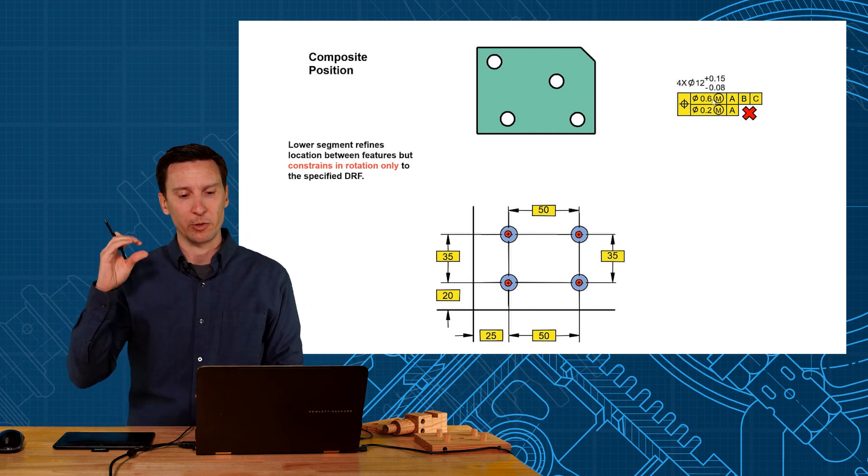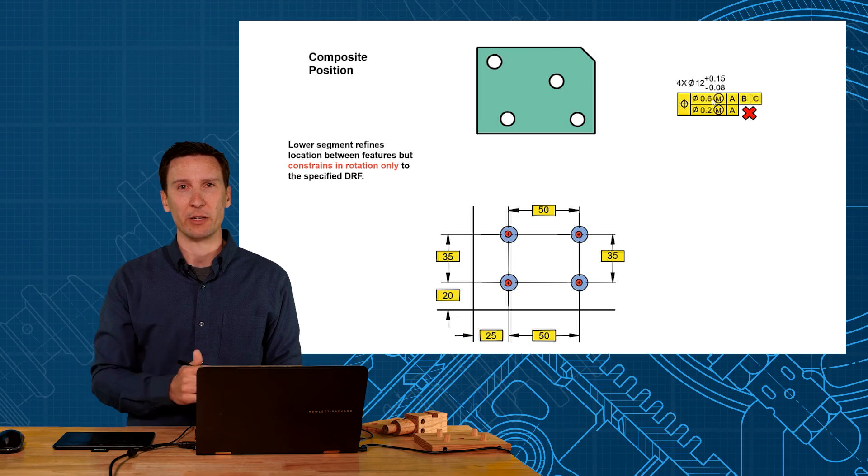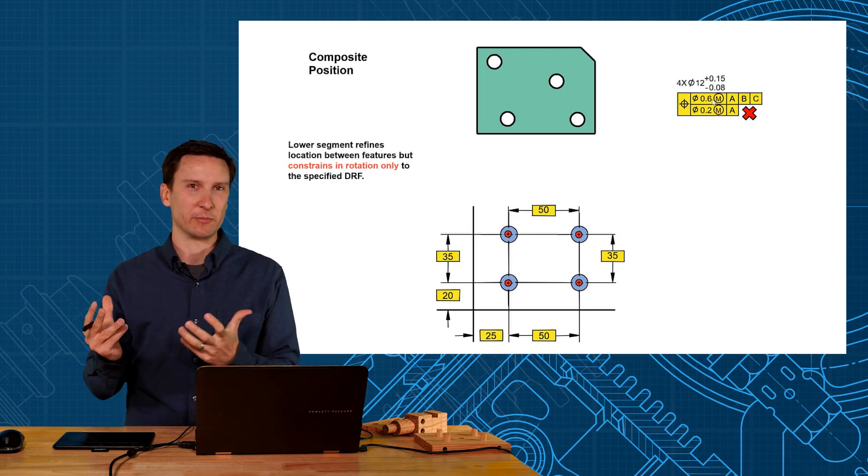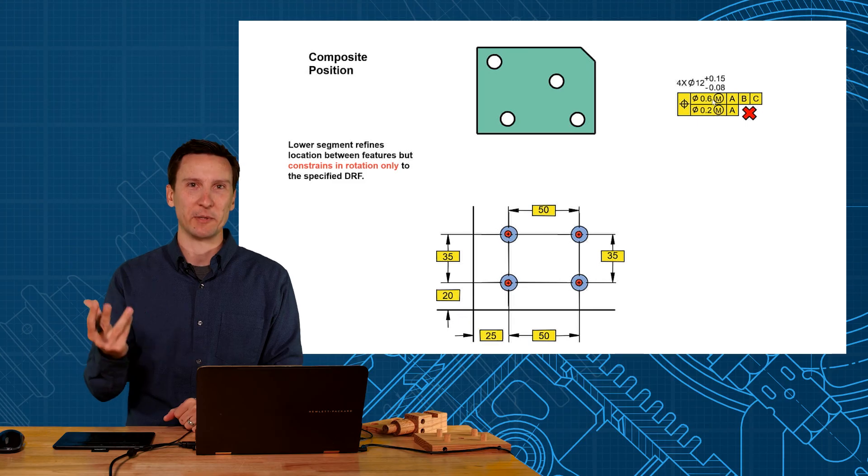This is your most common form of composite position tolerance. Just one symbol and then we use maybe a datum A to control perpendicularity. In the next video I want to show multiple datums that you can use for more complicated references.